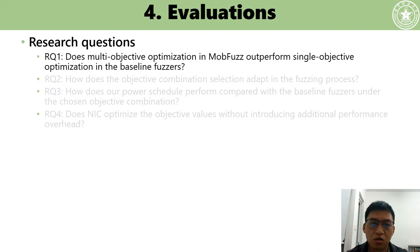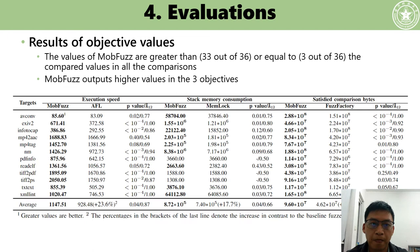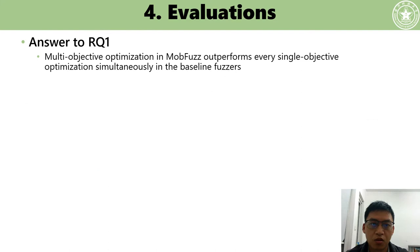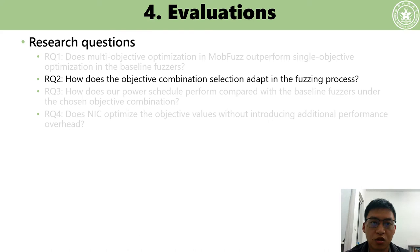We answer four research questions. Research question one: does multi-objective optimization in MOB-Fuzz outperform single-objective optimization in baseline fuzzers? In 33 out of 36 comparisons, the objective values of MOB-Fuzz are greater than the compared values. In the remaining 3 comparisons, they are equal. Therefore, MOB-Fuzz achieves higher values across all three objectives, and multi-objective optimization in MOB-Fuzz outperforms every single-objective optimization simultaneously.